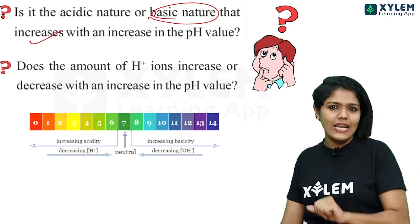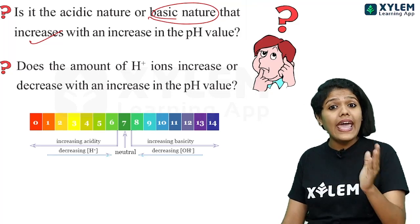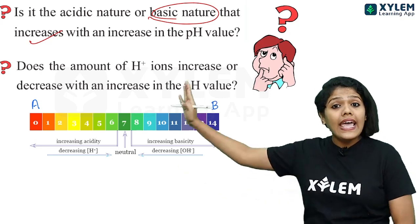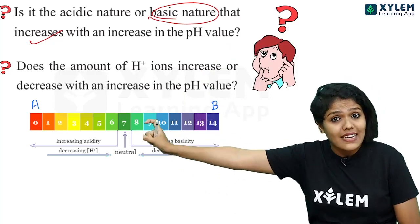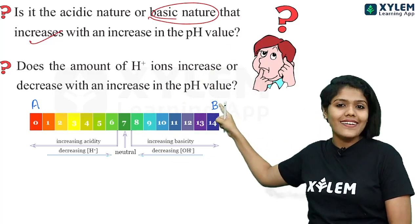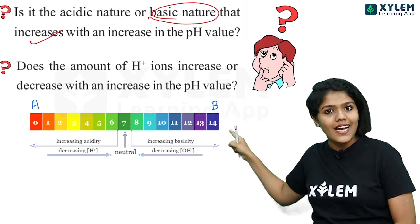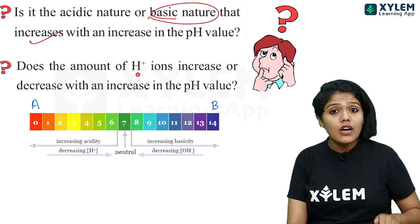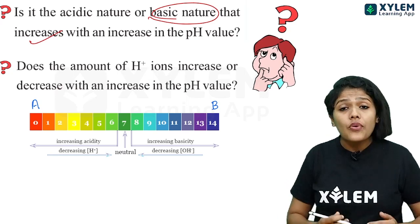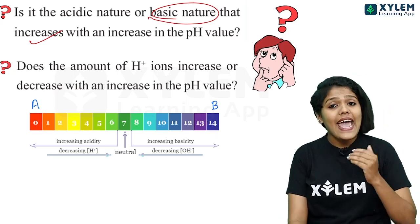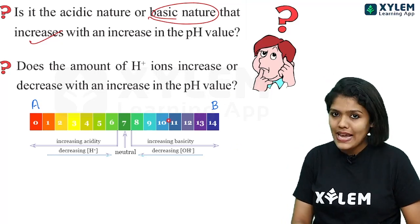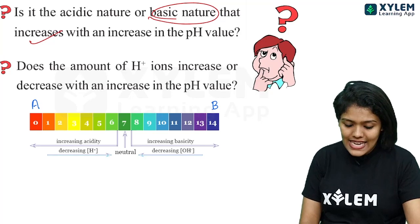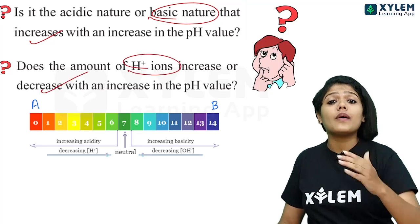A helpful memory trick: from the alphabet, take the first two letters A and B. The pH scale starts from zero — A stands for Acidic, and B stands for Basic. When moving toward zero, it becomes more acidic; when moving toward 14, it becomes more basic. The second question: does the H⁺ ion concentration increase or decrease with an increase in pH value? When pH increases, it becomes more basic, which means H⁺ ion concentration decreases. So the H⁺ ions decrease as pH value increases.